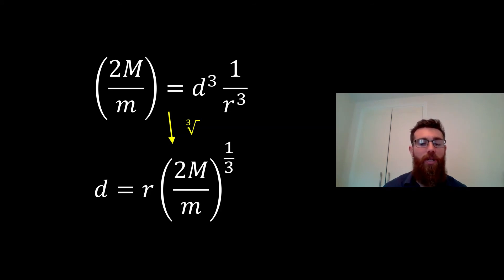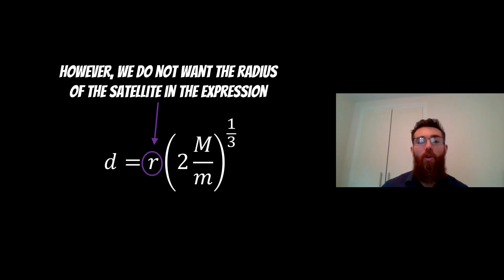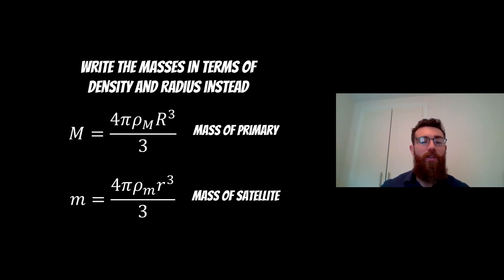Now that final expression there was not necessarily the final one, but it's got the radius of the satellite in there, the mass of the planet and the mass of the satellite. But we don't want the mass or the radius of the satellite in this expression. We want to exchange it for the radius of the planet instead. So what we can do is we can rewrite the mass in terms of density and radius for both of the planet and the satellite. And then we get these expressions there because we know how mass, density and radius all work together. We're assuming that these are spheres.